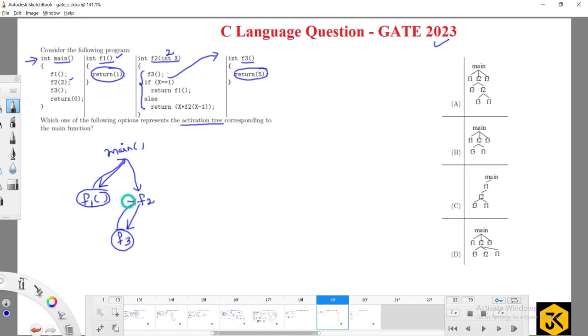After this statement, it is going to execute this block. Is the x value 1? No, the x value they passed here as number 2.